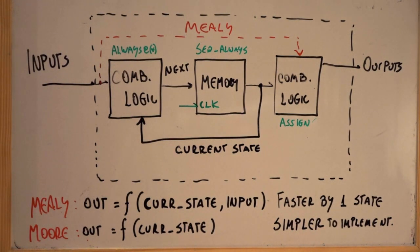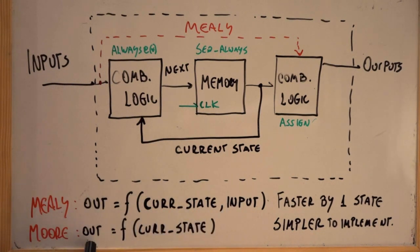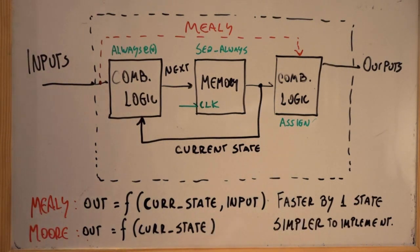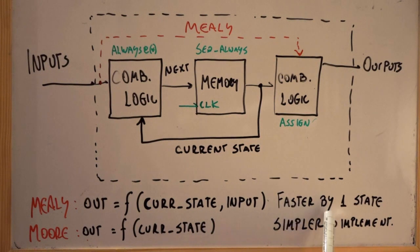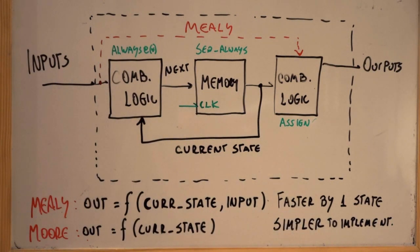This third part is going to calculate the output depending on the current state, or the input states as well in the case of the Mealy state machine. State machines can be in two flavors: Mealy or Moore. In the case of Mealy, the output is a function of the current state and the input. In the Moore, the output is a function only of the current state. The real difference: Mealy is probably faster by one state, while Moore is one state slower but simpler to implement.